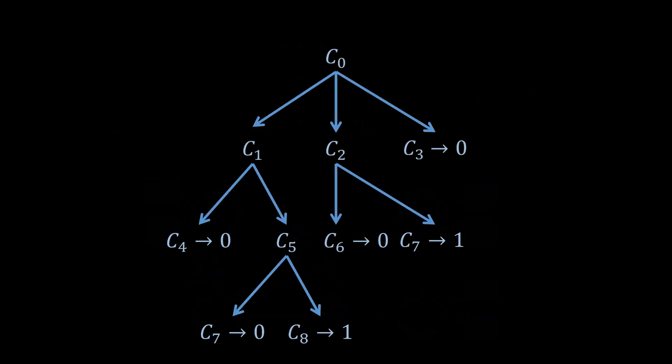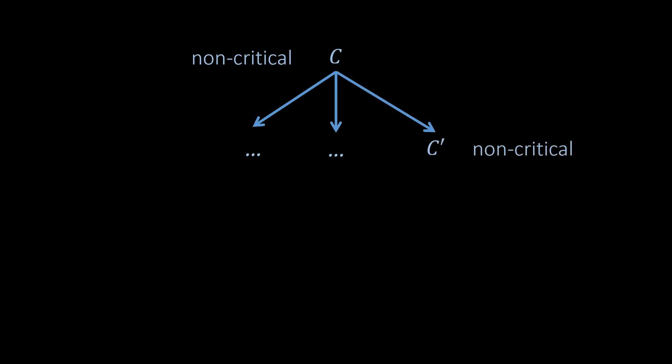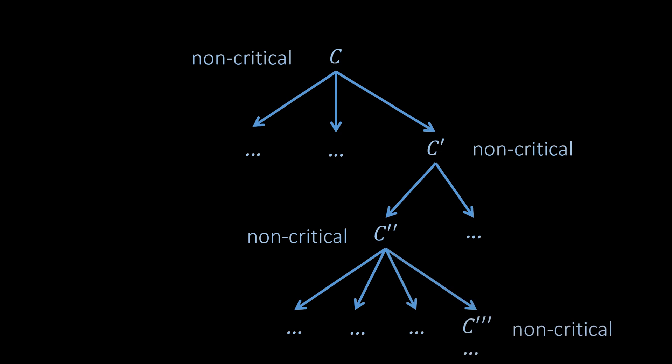The final piece of the puzzle are critical configurations. A critical configuration is a bivalent configuration that has univalent child configurations. These configurations are critical in the sense that the next message arrival will bring about a decision. When starting in a bivalent configuration, it is easy to see that termination is only guaranteed if the algorithm causes a transition to a critical configuration. In other words, if it is possible that the transition is always from a non-critical configuration to another non-critical configuration, the algorithm may never terminate, or if it terminates, the nodes may not agree on the decision value.